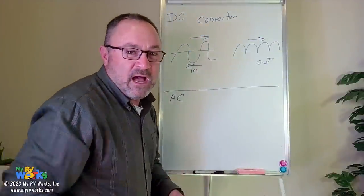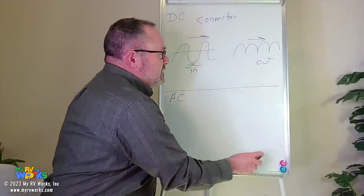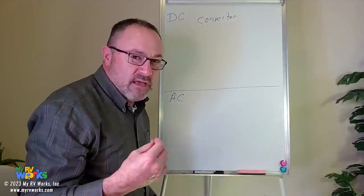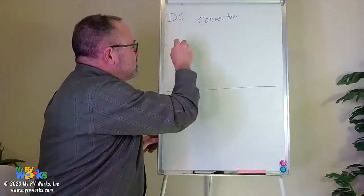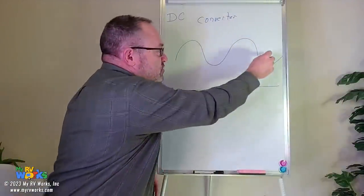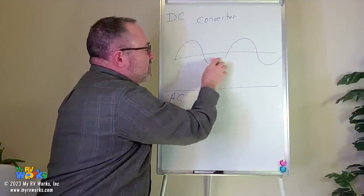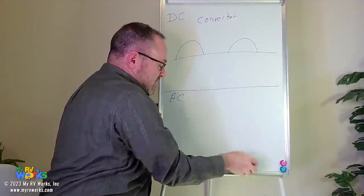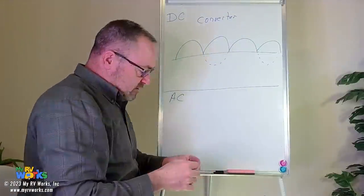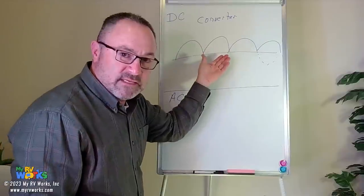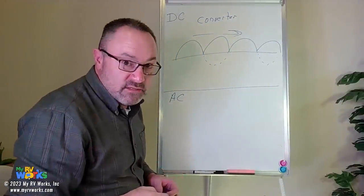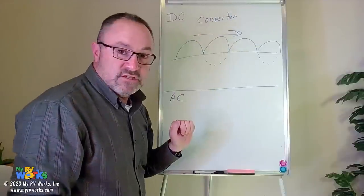The converter is converting the ups and the downs to only ups. But it also does something more — it steps down the voltage. That AC sine wave is giving us 120 volts, and as it relates to an RV, we want 12 volts out. So there's a factor of 10: we're giving it 120 volts AC and it's giving us 12 volts DC.